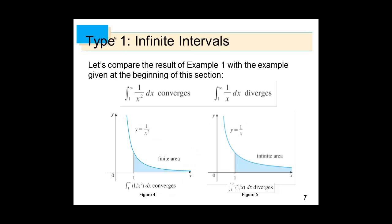Comparing the two: the integral from 1 to ∞ of 1/x² gives finite area, while 1/x gives infinite area. The reason is that 1/x² approaches 0 much faster than 1/x. The function 1/x² gets closer and closer to zero much earlier, so the area accumulates less, resulting in a finite total.